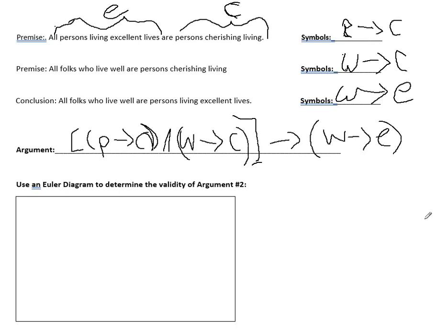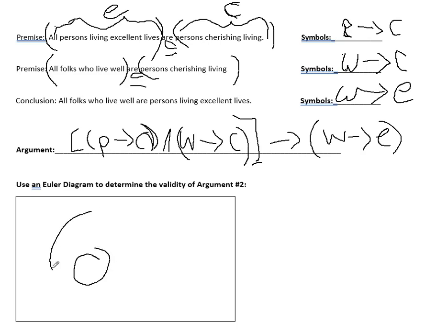We're going to use an Euler diagram to decide whether or not we can make the conclusion. According to the first premise, people who live excellent lives are a subset of people who cherish living. So we can make two circles — the inner circle is the subset of people who live excellent lives, inside the larger set of people who cherish living. Anyone inside the inner circle lives an excellent life; anyone inside the outer circle cherishes living.